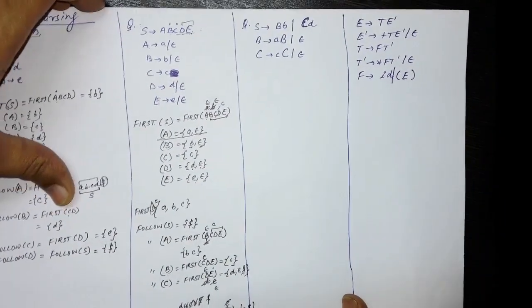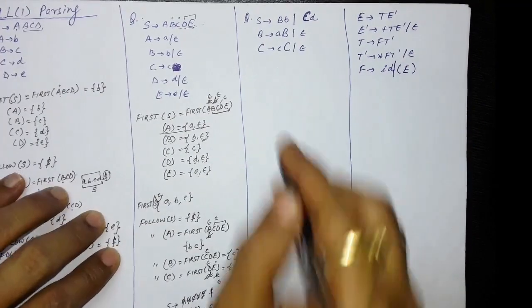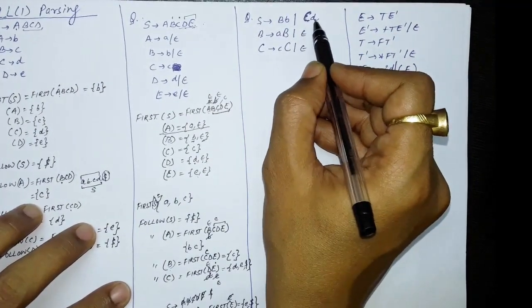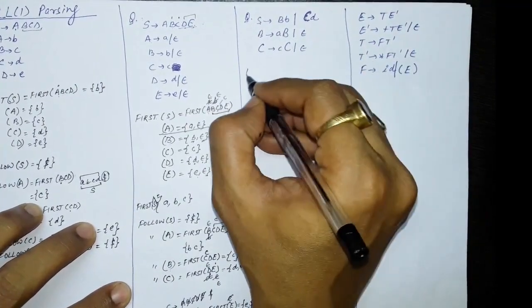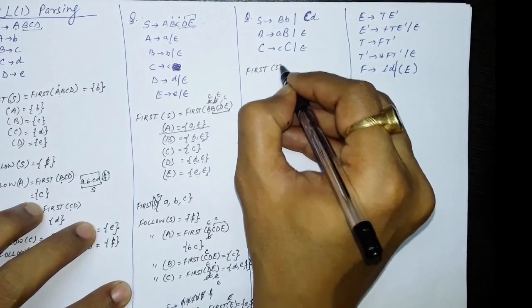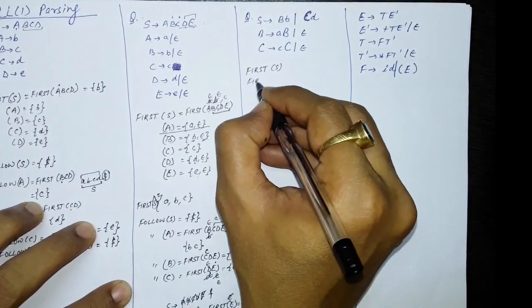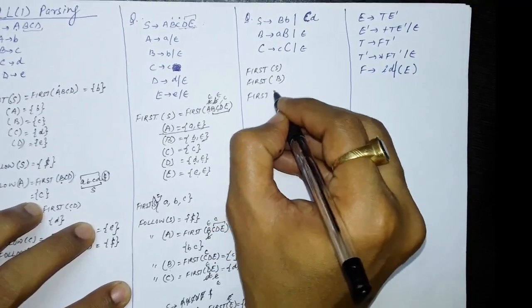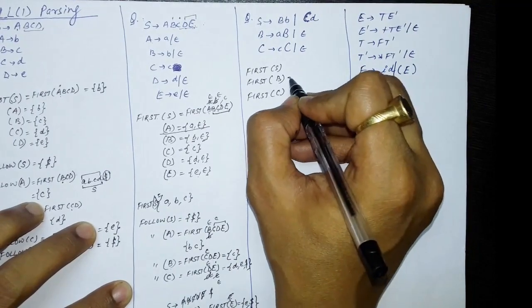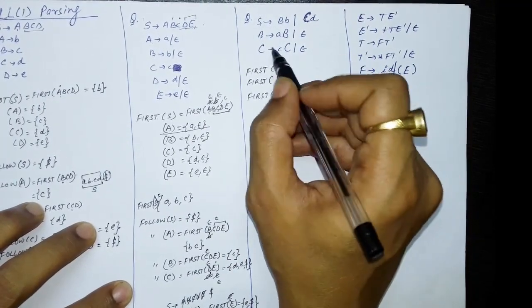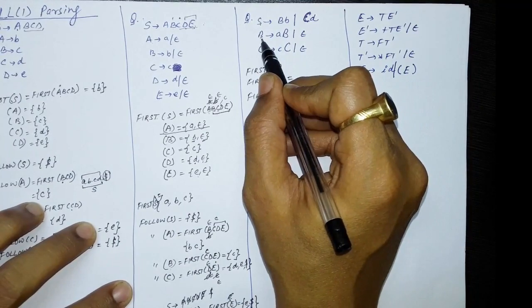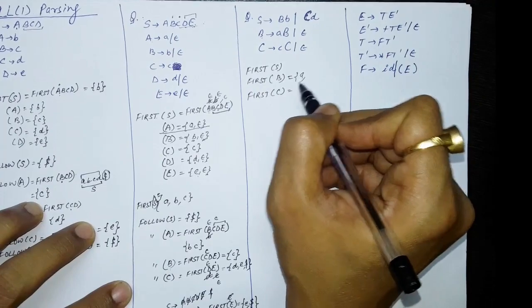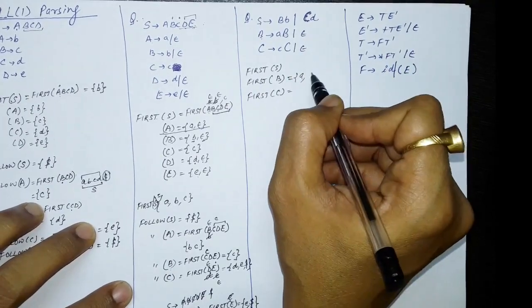Now let us find the FIRST and FOLLOW for another grammar. S produces capital B small b capital C small d. Productions: B produces small a capital B and epsilon; C produces small c and epsilon. Let us first compute the FIRSTs. For B: FIRST of B is small a and epsilon. For C: FIRST of C is small c and epsilon.